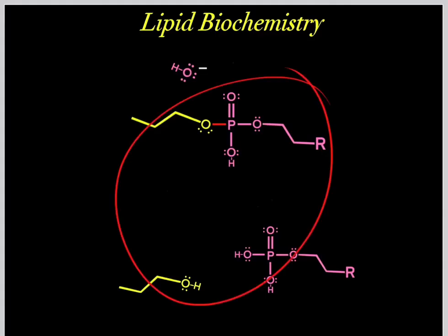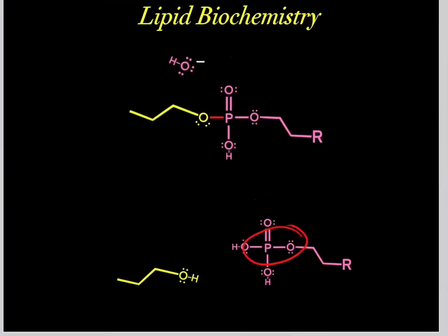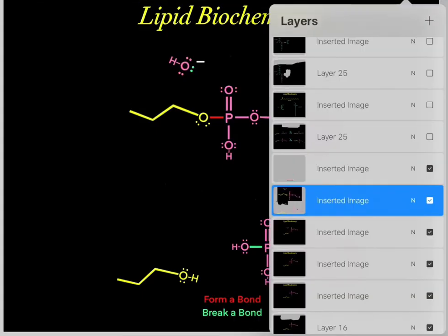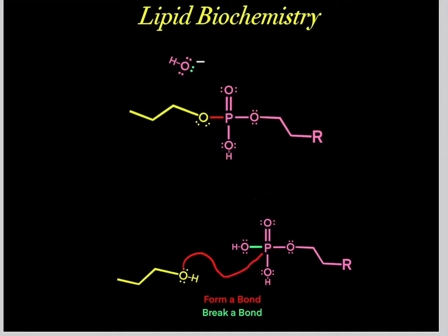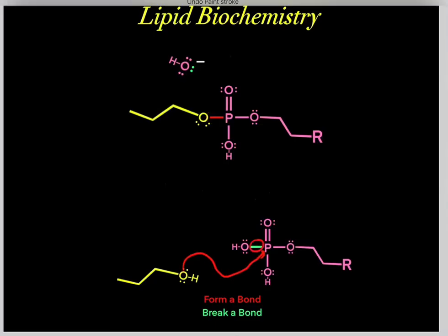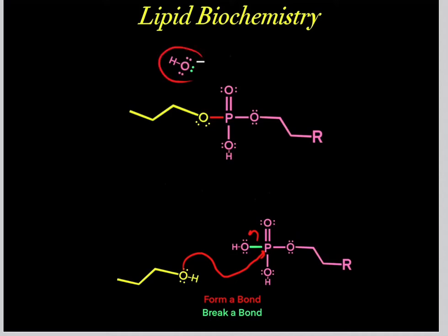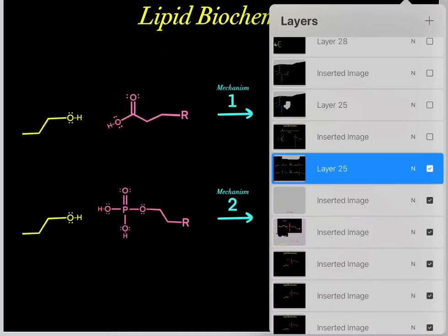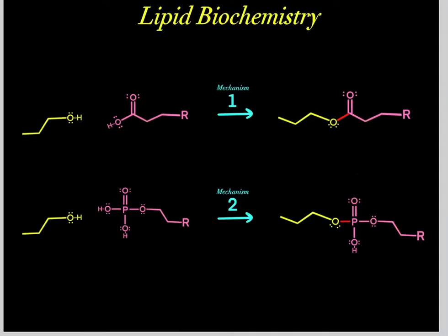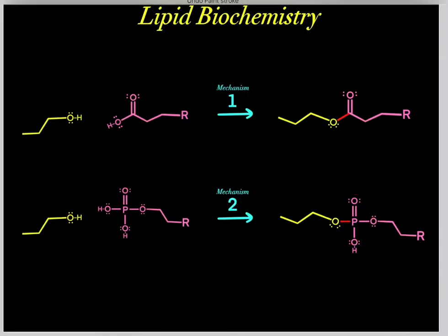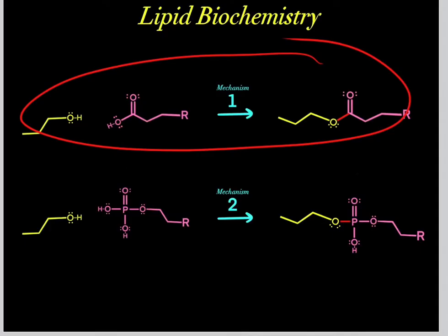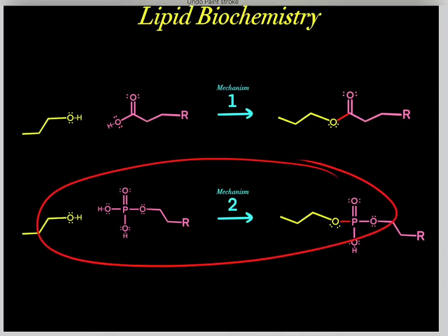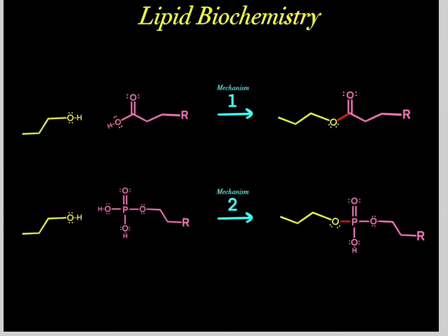In this second mechanism, we have a hydroxyl reacting with a phosphoester, forming this phosphodiester. It's the same idea — we nucleophilically attack forming a bond, and when we form a bond, we break a bond, where these electrons fall on this oxygen and we're left with this leaving group. So these are the two mechanisms: hydroxyl and carboxyl forming an ester, and hydroxyl and a phosphoester forming a phosphodiester. For the rest of this video, we'll refer to these as mechanism one and mechanism two.